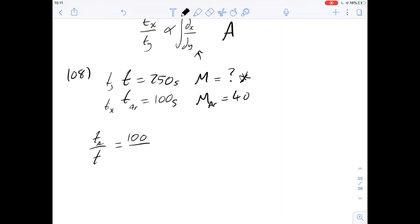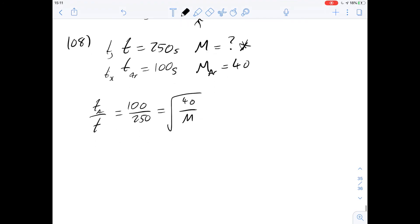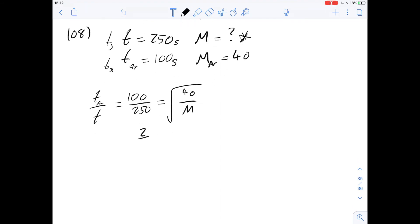ratio of tx to ty or t for argon and t for the unknown equals 100 over 250 and that's going to be equal to the square root of 40 over the mass because we can substitute these densities for the molecular masses.